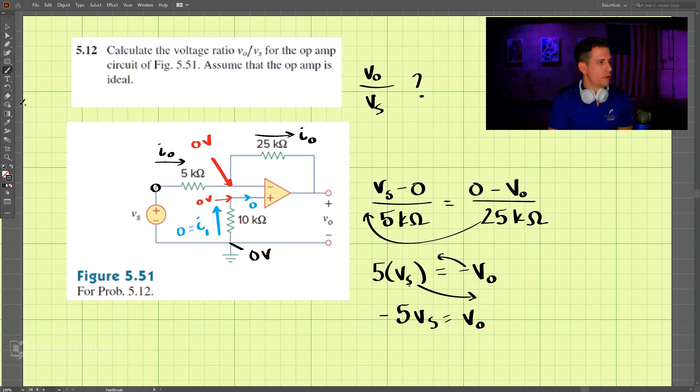And then moving that over to the other side, we have V0 over VS equals negative 5. And that is our solution for this problem.